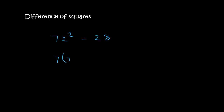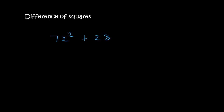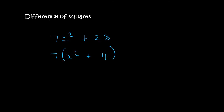Here you can take out a 7, leaving 7(x² - 4). Then x times x gives x², and 2 times 2 gives 4, so we get 7(x + 2)(x - 2). Here's the same question but with a plus in between: you can take out a 7 — that's always allowed — giving 7(x² + 4). But then you must stop, because you can't go further with a plus. The difference of squares method only works if it's a minus.